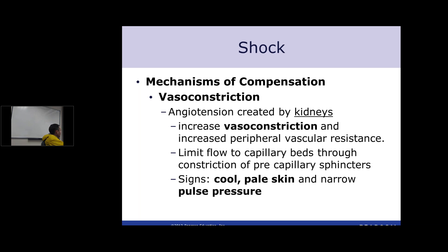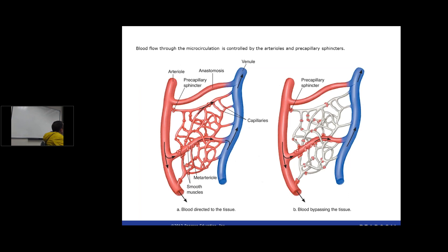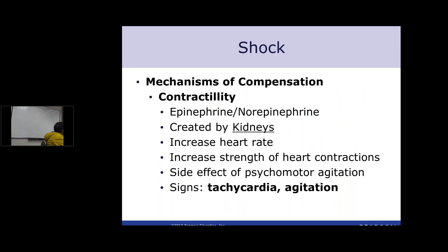To clarify: the origination of the response is in the kidneys, which release renin, but angiotensin itself is made in the liver from that renin. Angiotensin creates a bypassing of the capillary beds — going straight from the arterial system to the venous system to ensure good blood pressure — by causing constriction of smooth muscles around those capillary beds.